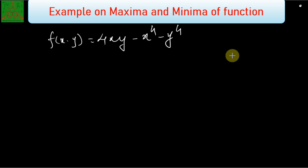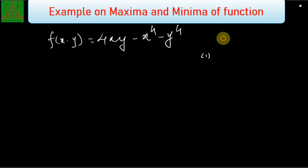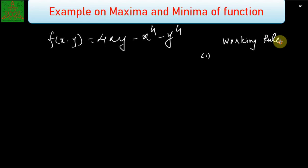We have also discussed the steps for finding the extrema and saddle points. Let us recall those steps. These are the working rules — I am calling them working rules — to find out the extrema value or saddle point. The first step is to find out fx and fy.